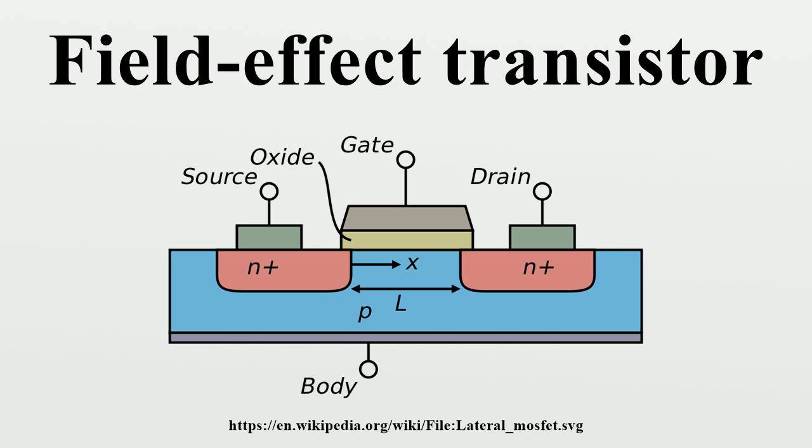The size of the gate length L in the diagram is the distance between source and drain. The width is the extension of the transistor in the direction perpendicular to the cross section in the diagram. Typically, the width is much larger than the length of the gate.